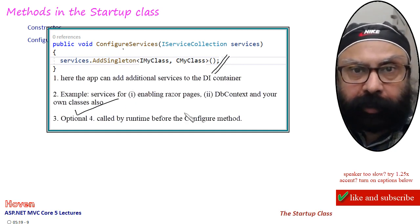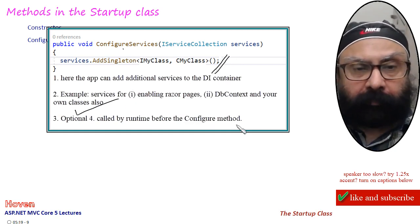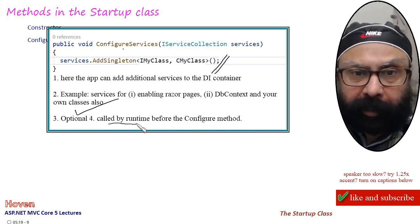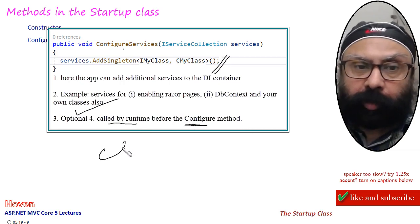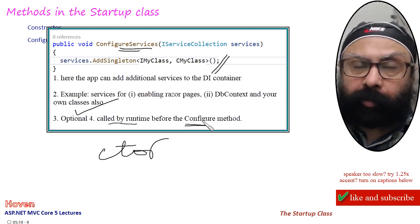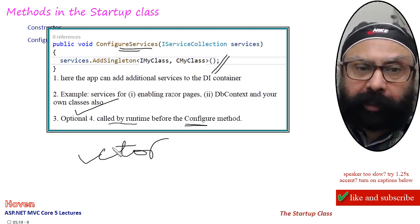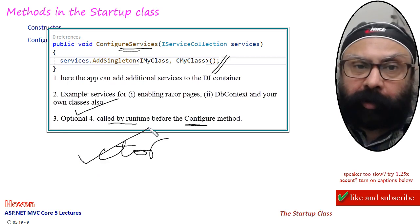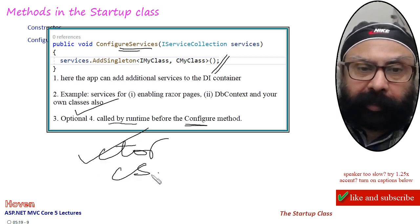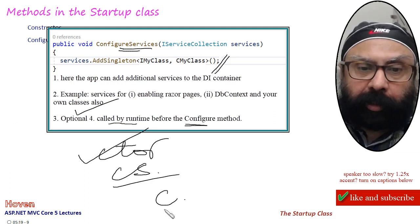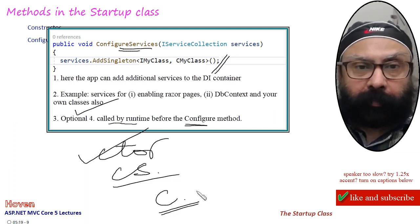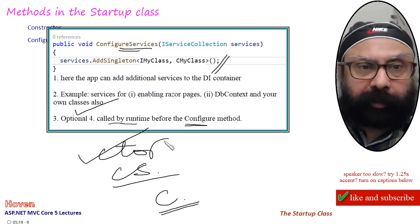This method is entirely optional. It is called by the runtime before the third Configure method. So the order is: constructor is called first, then ConfigureServices is called, and finally the Configure method is called.